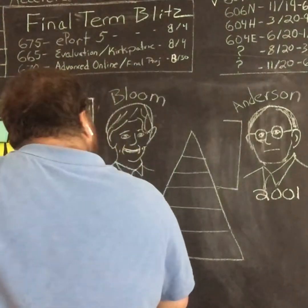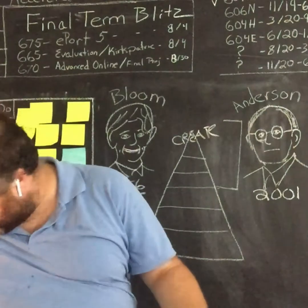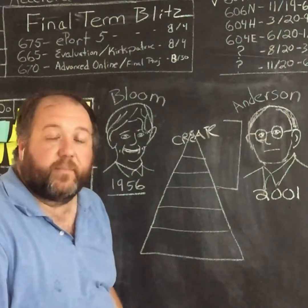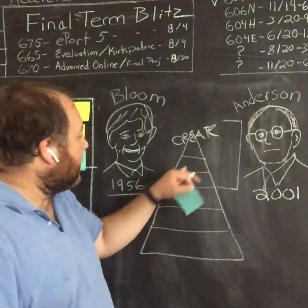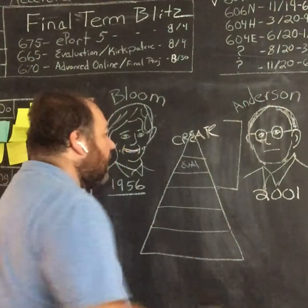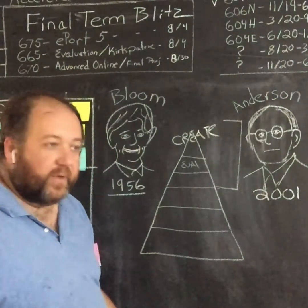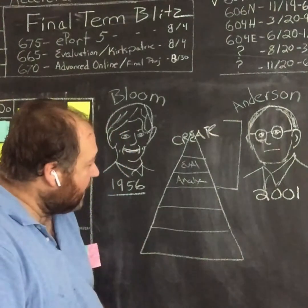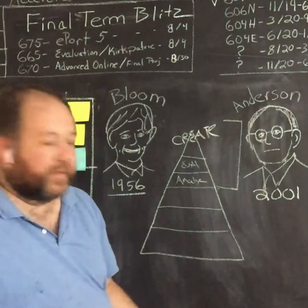At the top of the taxonomy we have create — having your students create something. They could create a film, a brand new way of doing something, or 3D print something. But in order to create something, you have to know how to evaluate what's going on with the topic. So the level underneath that is evaluate. And if you're going to evaluate something, you need to know how to analyze it, because it's tough to evaluate something if you can't break it down. So we have analyze. And if you're going to analyze something, you need to know how to apply what it is you're analyzing — otherwise you're just talking about stuff you don't know. So we have apply.